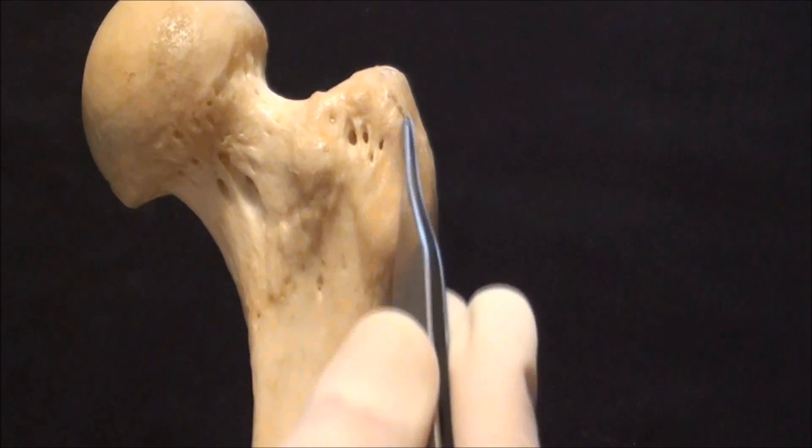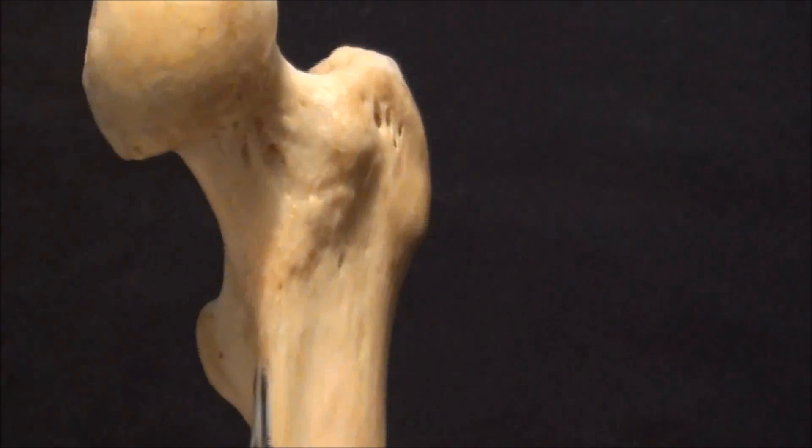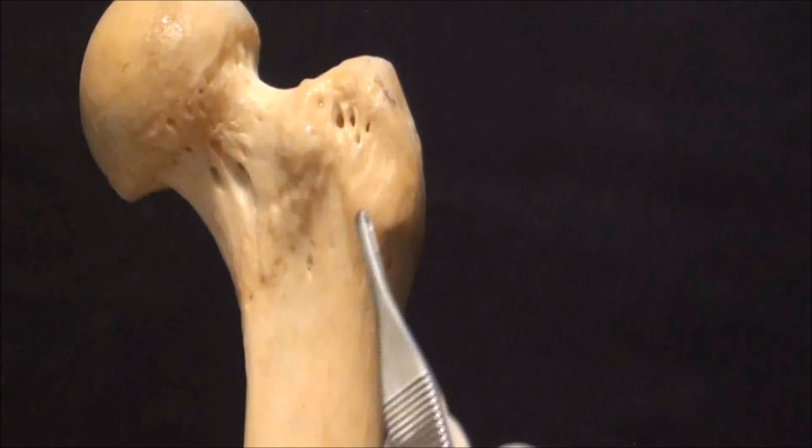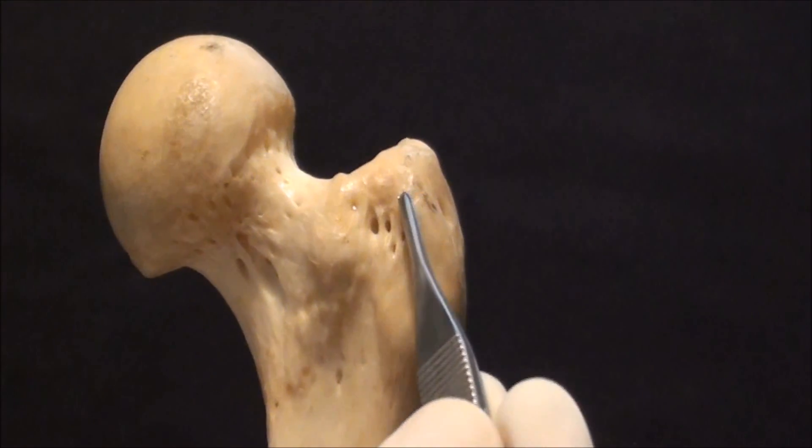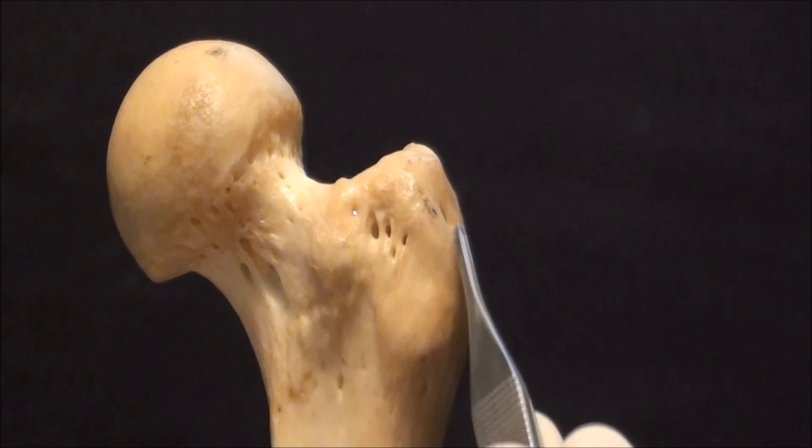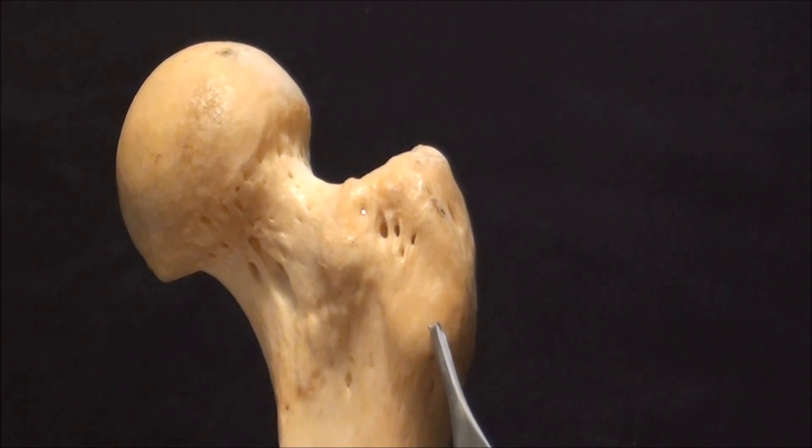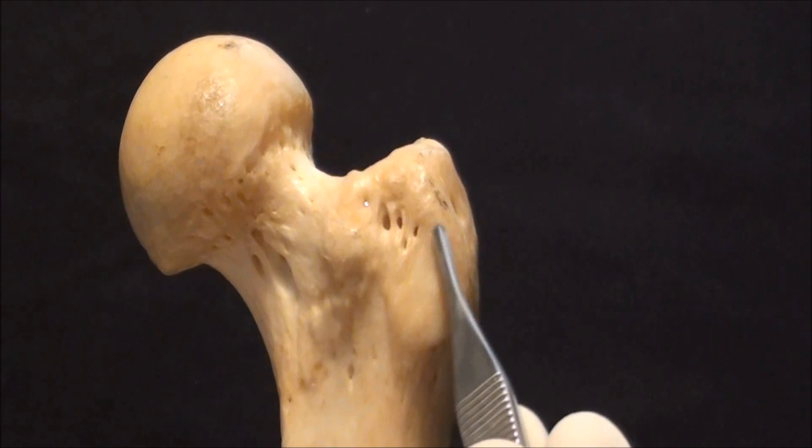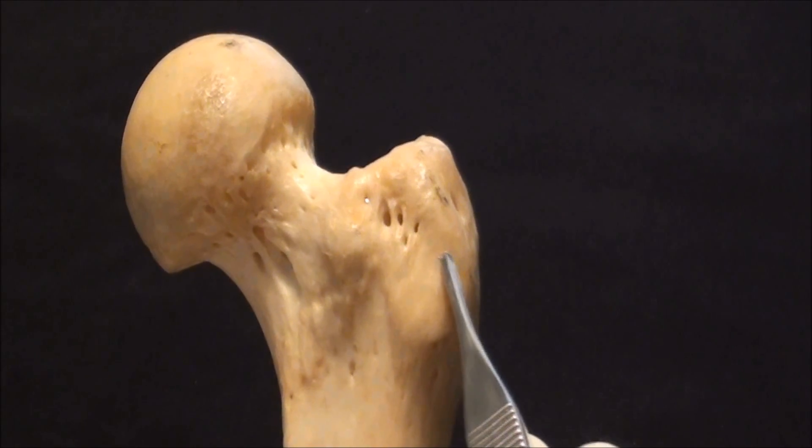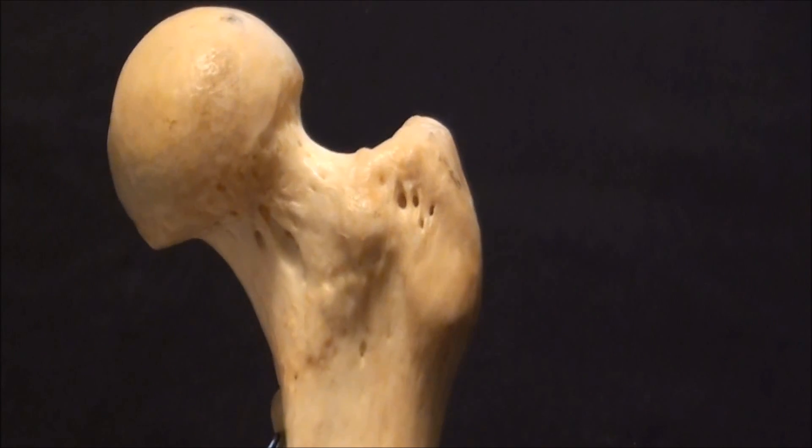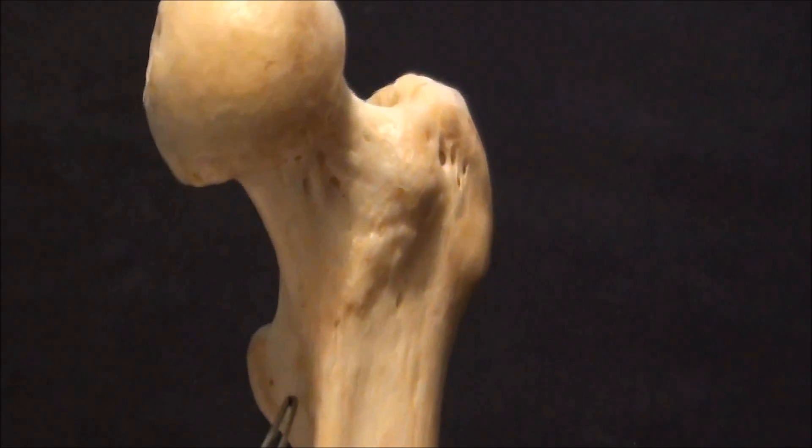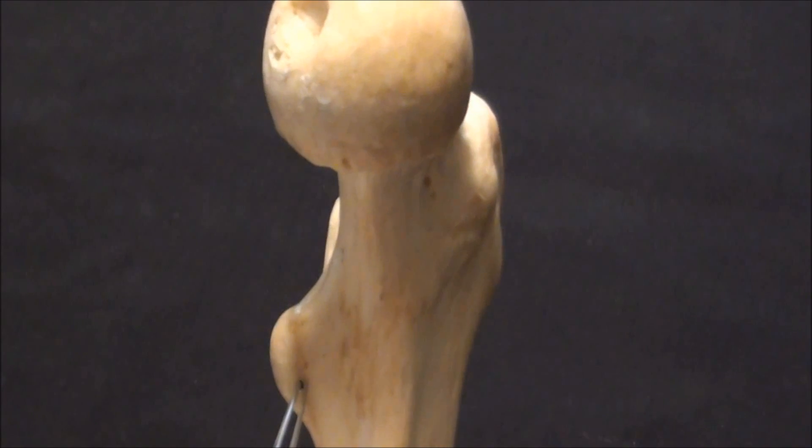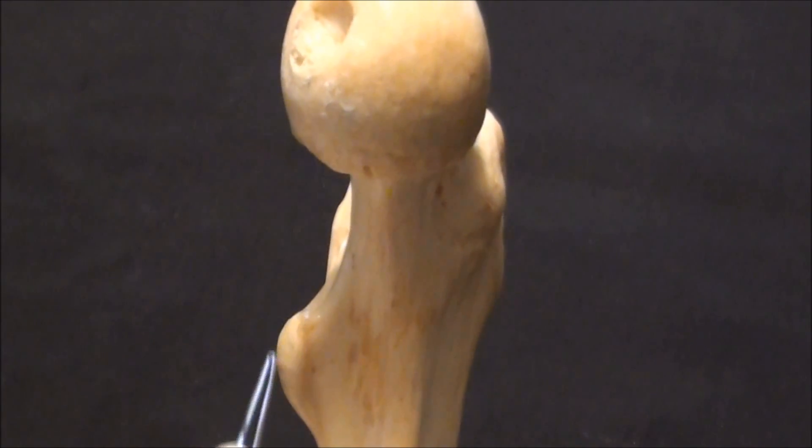They're called greater and lesser trochanters. A greater trochanter as it's illustrated here is positioned more superiorly and it is probably the most lateral part of the hip bone. Something that we would normally point to when we want to make a quick reference to our own hip. The lesser trochanter is situated more on the posterior and medial aspect of the bone as it could be seen when I slowly rotate the femur. This is the lesser trochanter.